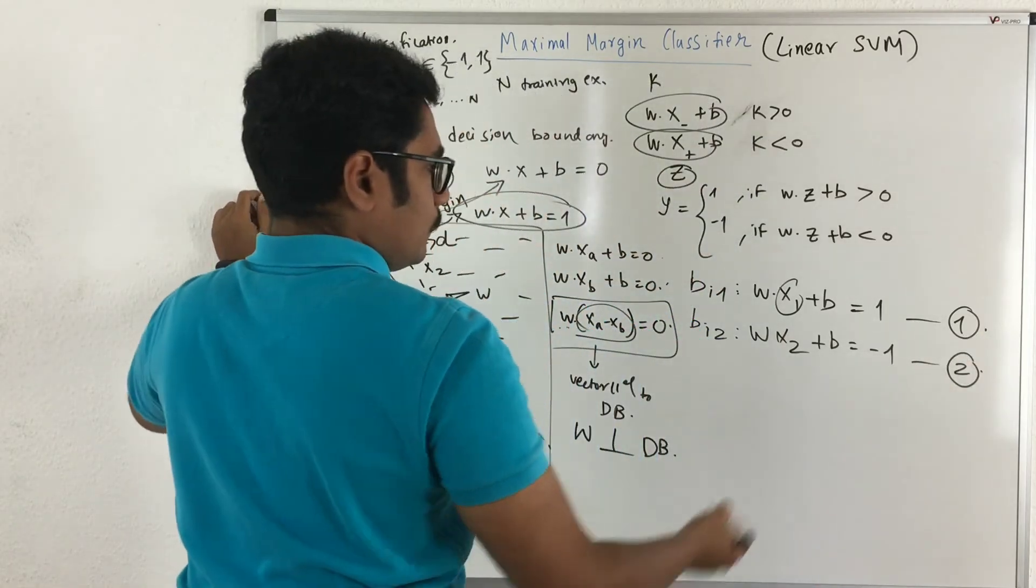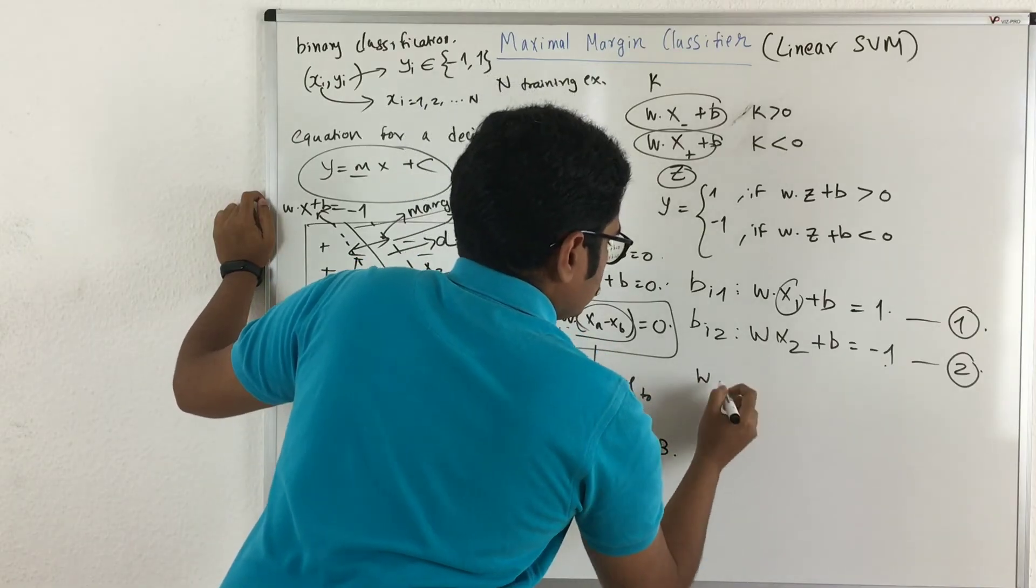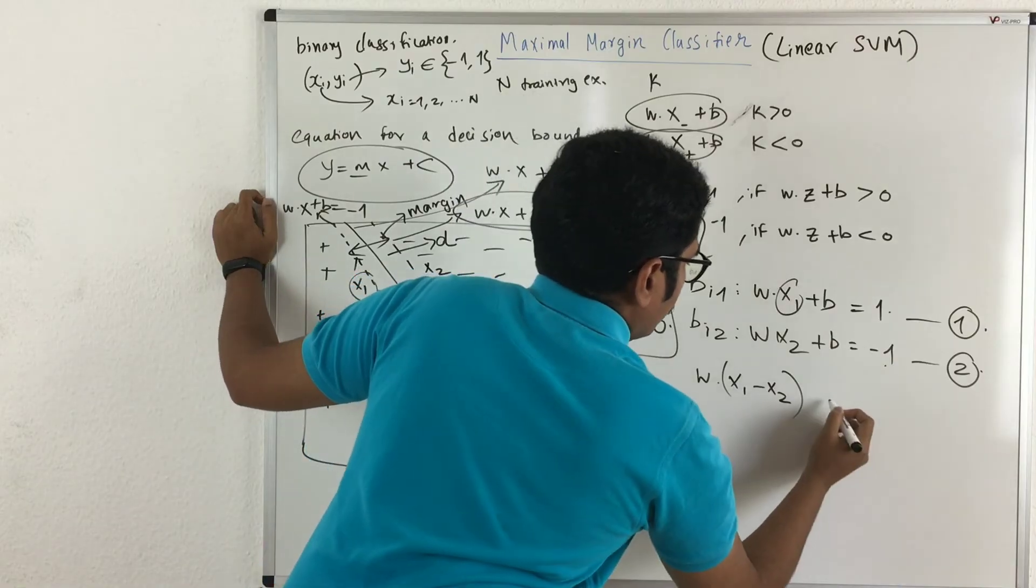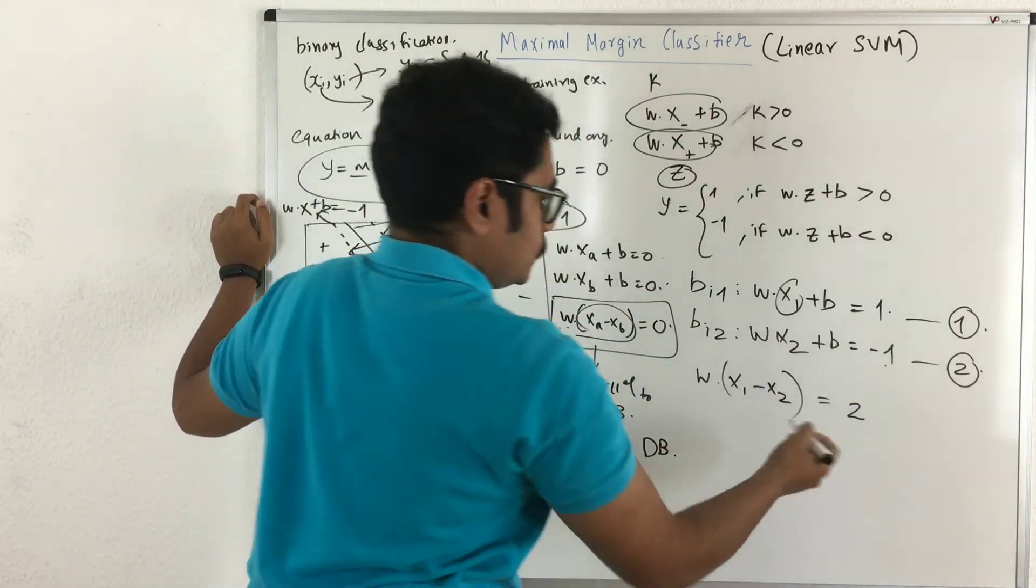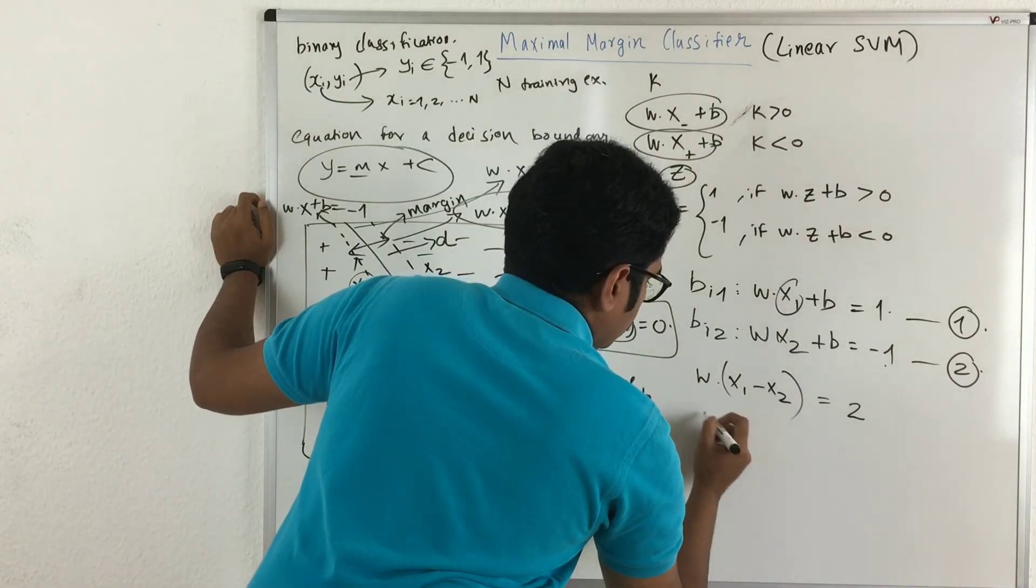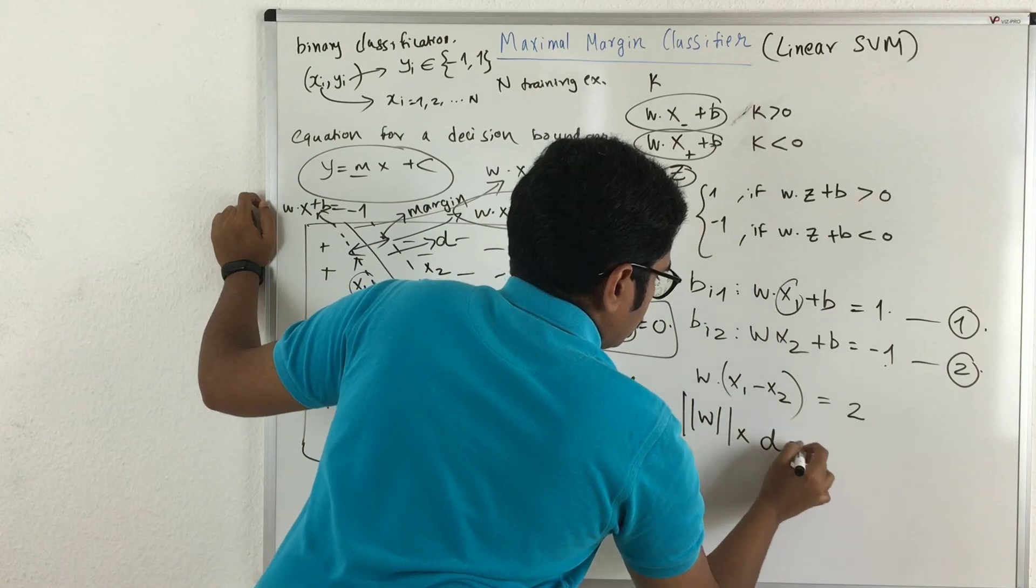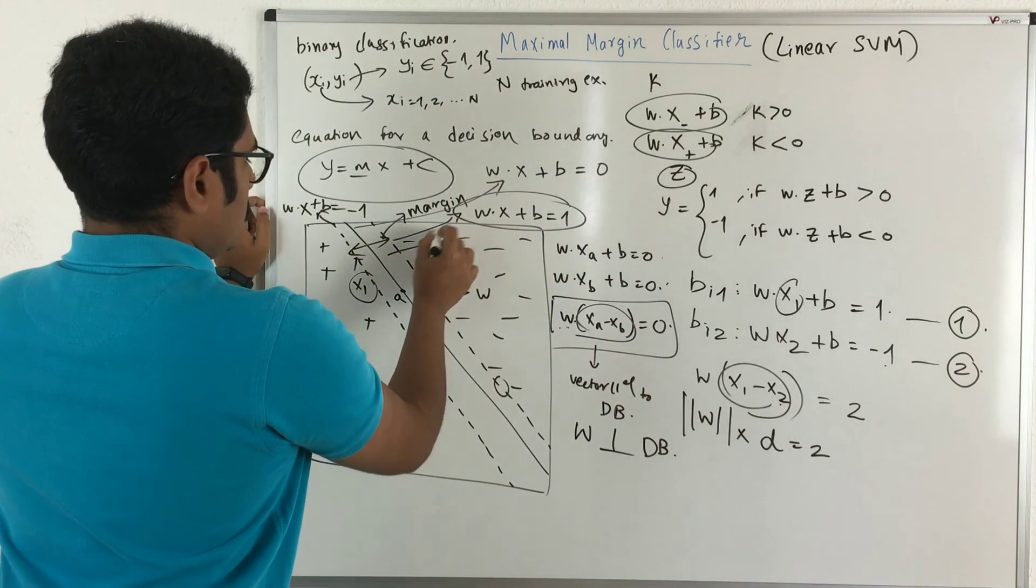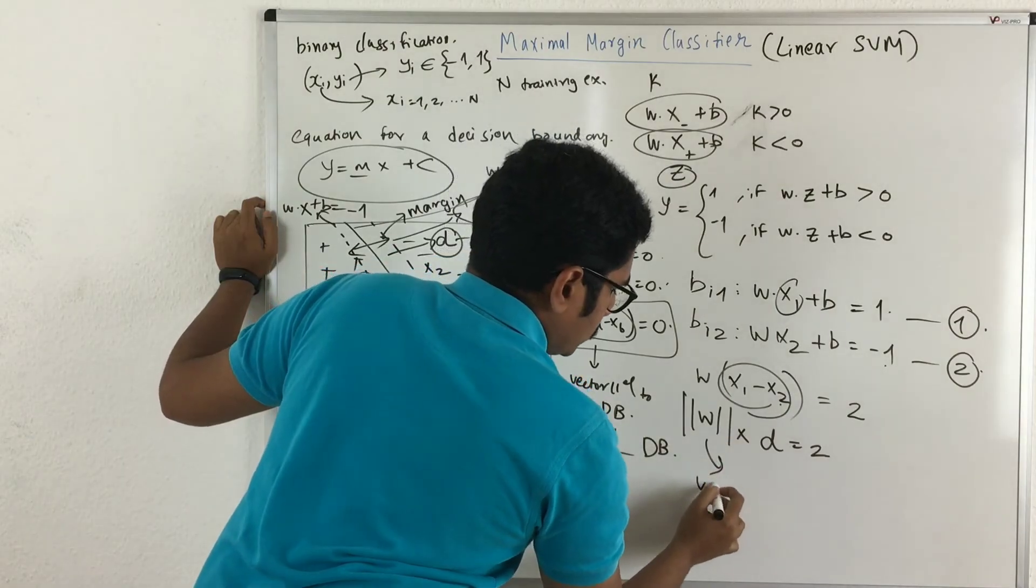So this one and you have X2 plus B equals minus 1. Now again, what we do is we subtract this from this. So with that what you get is W common X1 minus X2. You have equals 1 minus minus 1, that is 2. Now this reduces to, since we know X1 minus X2 is something or D, that is a margin, and this part is called a vector norm.